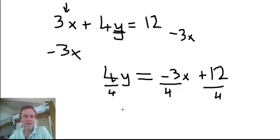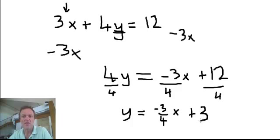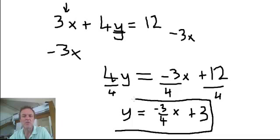So we're left with y equals, see what's going on now, negative 3/4 x. Can you see that right there? Negative 3/4 x plus, what's 12 divided by 4? 3. So this is now the slope intercept form of the equation.